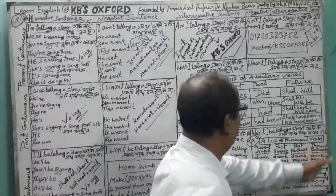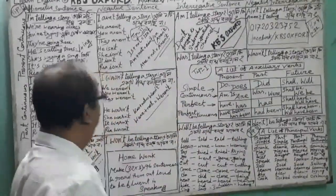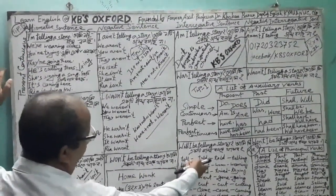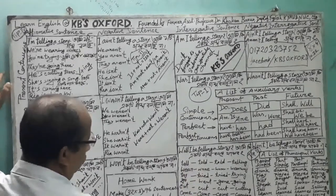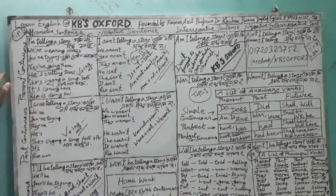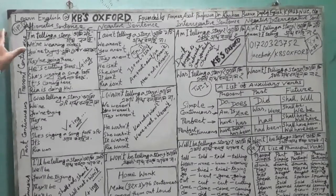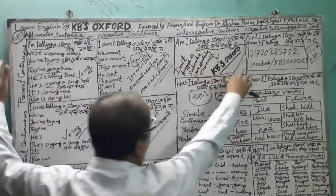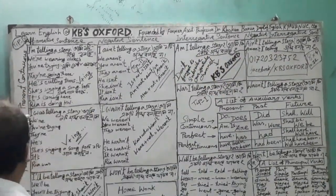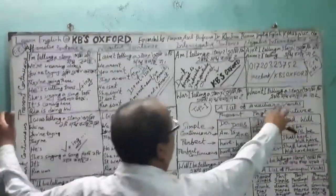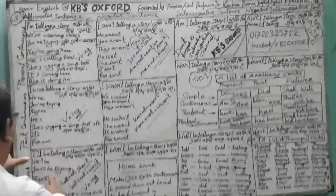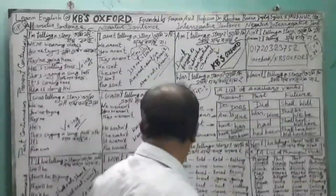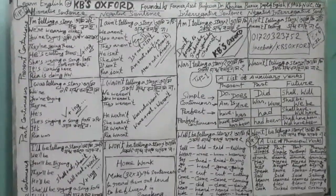Let's start with subject 'I'. Present: I am telling a story. I am not telling a story. Am I telling a story? Past: I was telling a story. I wasn't telling a story. Was I telling a story? Future: I'll be telling a story. I shan't be telling a story. Shall I be telling a story? I have finished 12 sentences with 'I'.